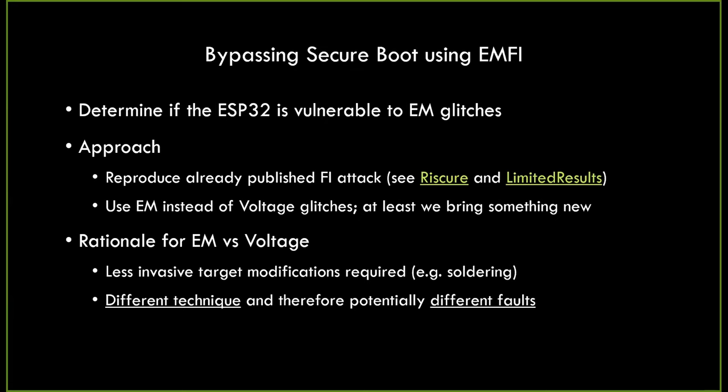There is also a reason to choose EM over voltage glitching: when you inject an EM glitch into a target, you typically need less modifications. For example, with voltage glitching, you need to provide your own voltage to the chip by making modifications to the PCB circuitry. For an EM glitch, that is not required. Additionally, different fault injection techniques may result in different types of faults, meaning a different technique may allow you to perform different types of attacks — making this research on an actual target very interesting.